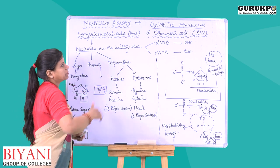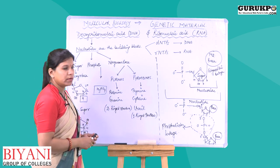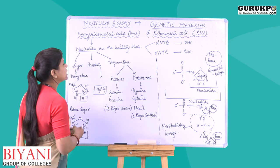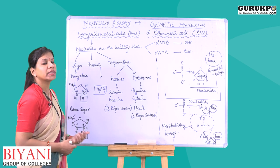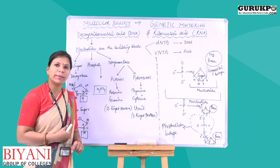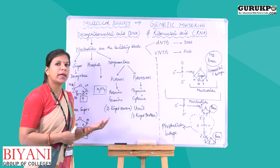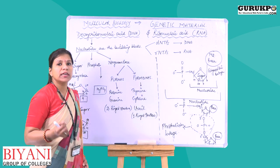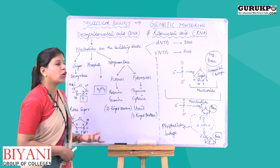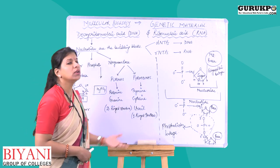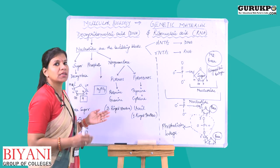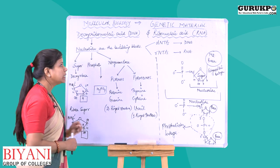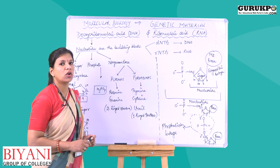DNA is differentiated from RNA in that DNA possesses deoxyribose sugar whereas RNA possesses ribose sugar. DNA is a double-stranded structure with antiparallel strands — one running in the 5-prime to 3-prime direction and the other running in the 3-prime to 5-prime direction. RNA is always a single-stranded molecule. Regarding stability, DNA is highly stable compared to RNA because the double-stranded structure is stabilized by hydrogen bonds among the nitrogenous bases, whereas RNA's single strand makes it less stable.